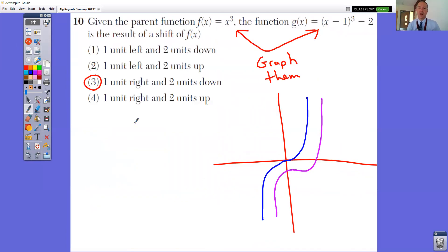Number 10, given the parent function x to the third power, the function g of x equals x minus one to the third power minus two. What happens when you do that? Well, what I would do is graph the two. The original one is this blue one, and then we type in this one on the same one. Just type it into your y equals and see what happens. Well, it shifted one unit over to the right, and it shifted two units down, because we're subtracting one from the x value and we're subtracting two from the entire function.